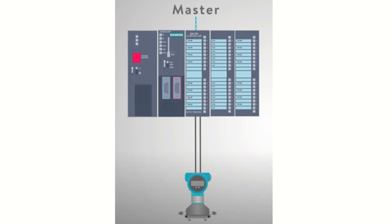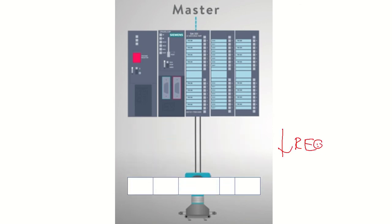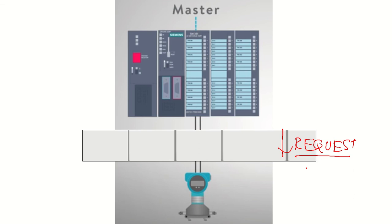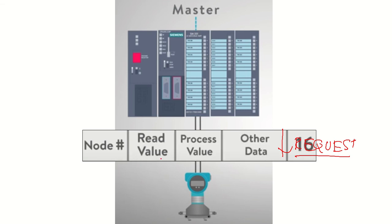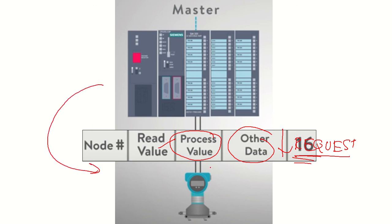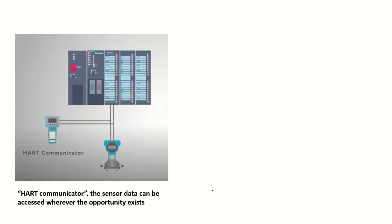HART follows a master-slave architecture. The control from the master to the device comes in the form of a request. This request will contain the node being referred to, the actual process value to be measured, any commands to be sent, and immediate codes or data. That is the nature of the data transmitted from master to slave — you can also think of it as a client-server model.